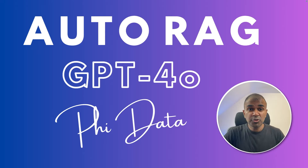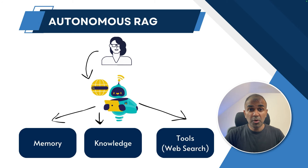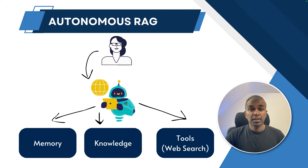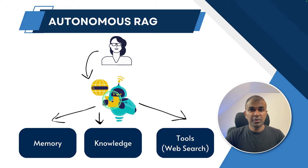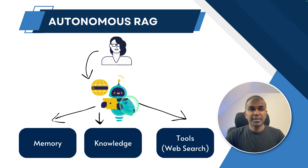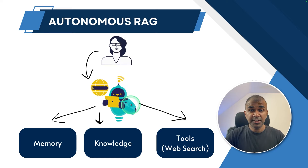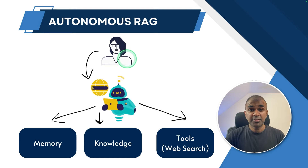We are going to see about auto RAG using Phi Data. So what is auto RAG? To understand that first, we need to know what is RAG. When the user asks a question to a large language model or AI, it uses the information which it can access, and that information is used as the context to generate a response to the user. That is RAG.